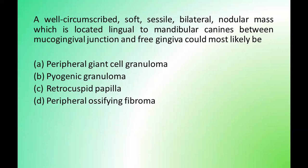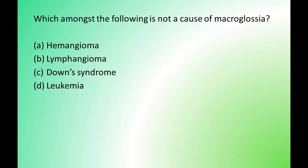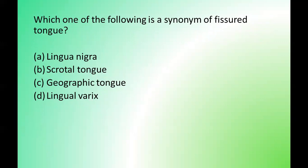Next question: a well-circumscribed soft bilateral nodular mass located lingual to the mandibular canine, between the mucogingival junction and free gingiva, could most likely be which of the following? Options are: peripheral giant cell granuloma, pyogenic granuloma, retrocuspid papilla, peripheral ossifying fibroma. The correct answer is option C — retrocuspid papilla. Next question: which amongst the following is NOT a cause of macroglossia? Options are: hemangioma, lymphangioma, Down syndrome, leukemia. The correct answer is option D — leukemia.